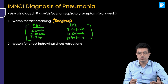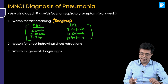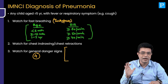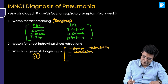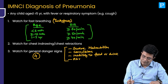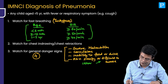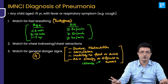Second, we watch for chest indrawing or chest retractions — use of accessory muscles of respiration. Note that nasal flaring is not included as a feature of pneumonia. Third, we watch for general danger signs. According to the latest IMNCI guidelines, there are four general danger signs: severe malnutrition, convulsions, inability to feed or drink, and being abnormally sleepy or difficult to awake — which is essentially lethargy. Although the guidelines do not use the word 'lethargy,' if an MCQ uses it, it is considered a danger sign.